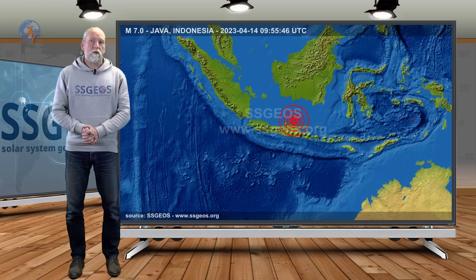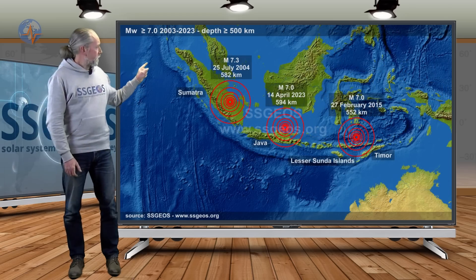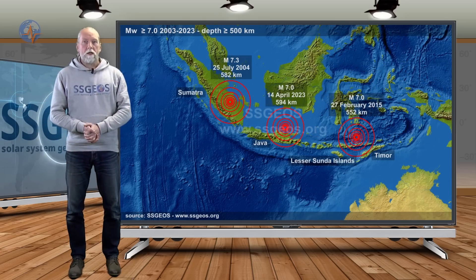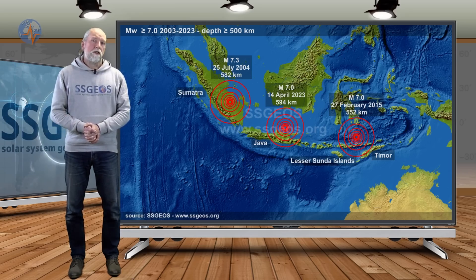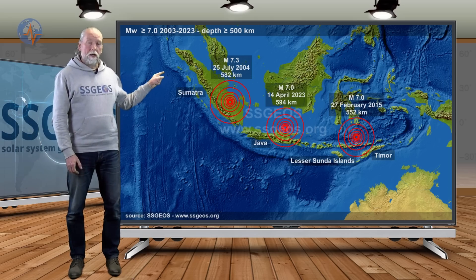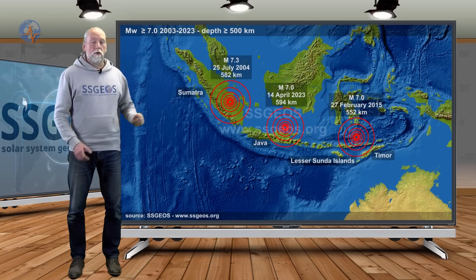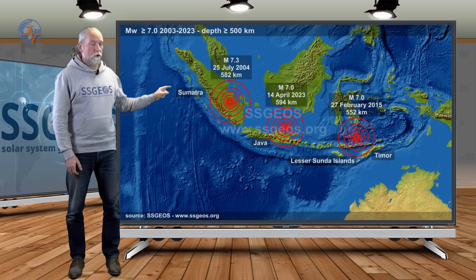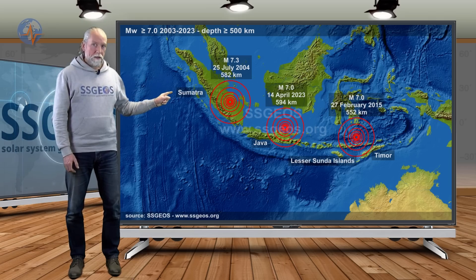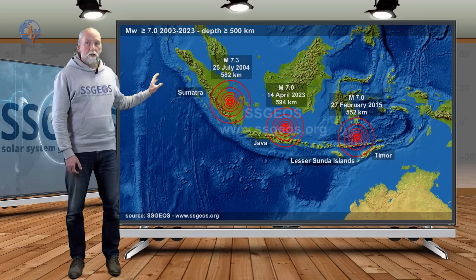This made me look into history to see how often these deep earthquakes occur below the Sunda plate. I recall a magnitude 7.3, if we look at the map here, that was on 25 July 2004, 582 kilometers deep, and that was five months before the Boxing Day earthquake. Then on the 14th we had also a deep major earthquake, almost 600 kilometers deep below the Sunda plate but much closer to Java. This is from the last 20 years, and as you can see, these major earthquakes do not occur very often, but it is evidence of subducting plates. In this case, the Sunda plate is actually subducting the Australia plate.